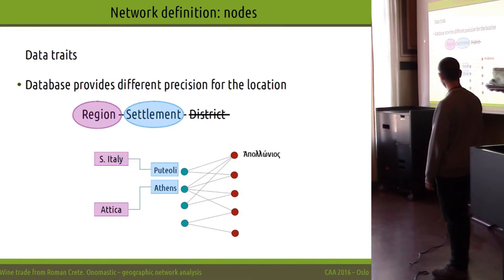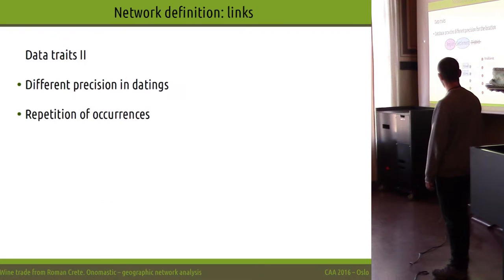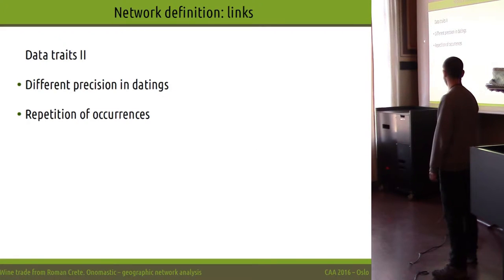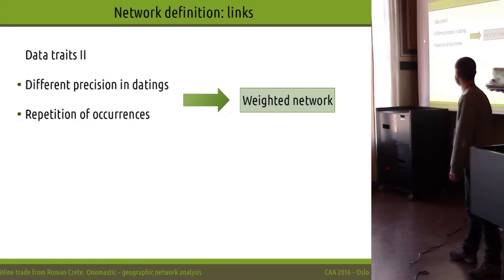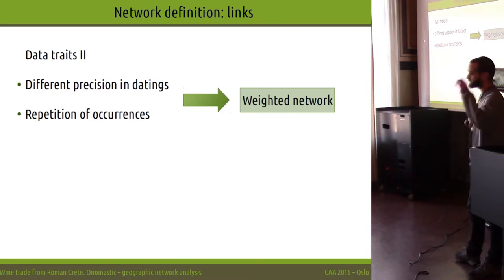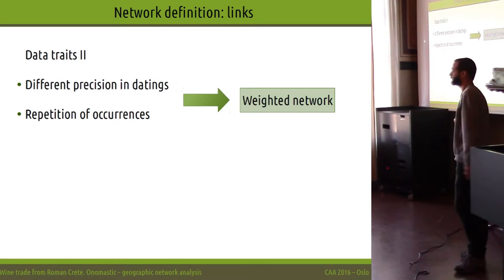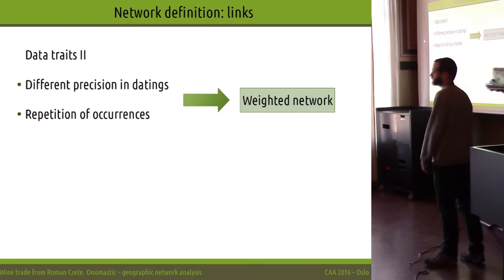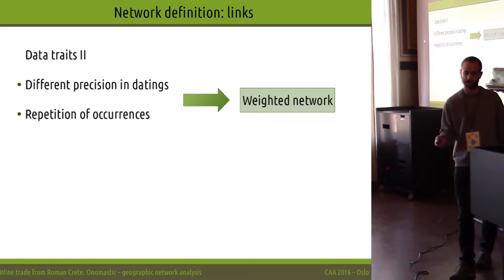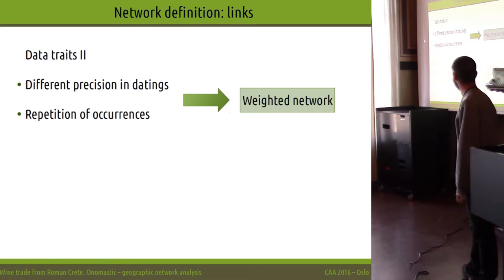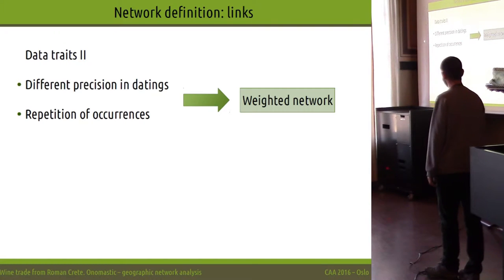We keep the region as a node attribute that we will use later, ending up with something like this. Another concern was the different precision levels in datings and the possibility of having several repetitions in the query results, so we decided to deal with a weighted network.